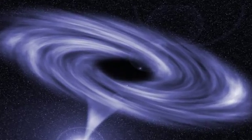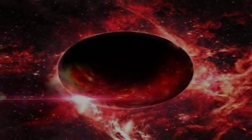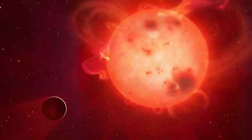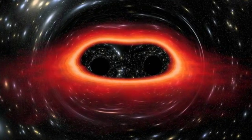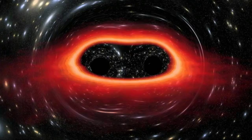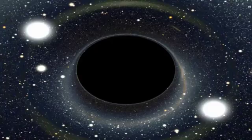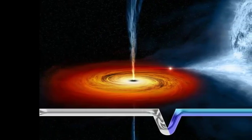This black hole, technically known as SDSS J010013.02 plus 280225.8, or J0100 plus 2802 for short, is not only the most massive quasar ever seen in the early universe but also the most luminous. It is about 429 trillion times brighter than the Sun and 7 times brighter than the most distant quasar known.